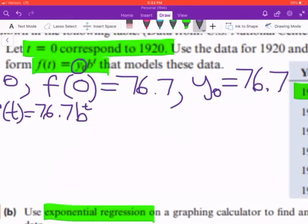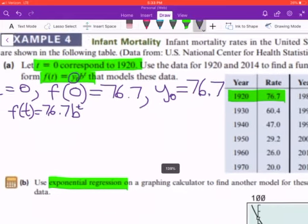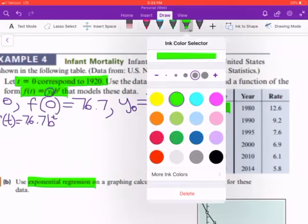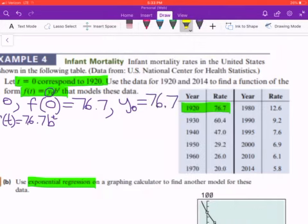Now we could use another point, so for example - actually, it's asking us here to use the year 2014. So for the year 2014, we have the mortality rate, it dropped by a lot. So with that said, we have that f of 14.